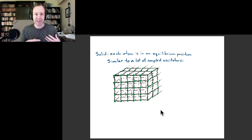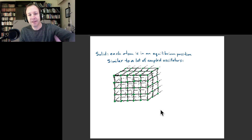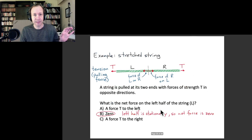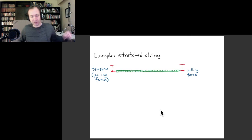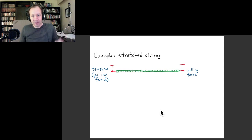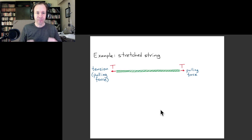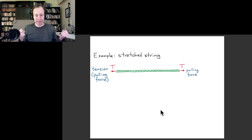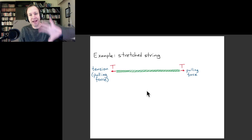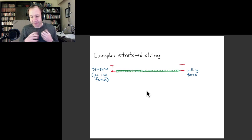Instead of considering this three-dimensional situation, I want to start simpler and consider just a one-dimensional situation — a solid stretched along one direction but thin in the others: a rope, string, or wire. Examples include guitar strings, piano strings, and violin strings. This one-dimensional case is essentially the same as those masses connected together by springs.